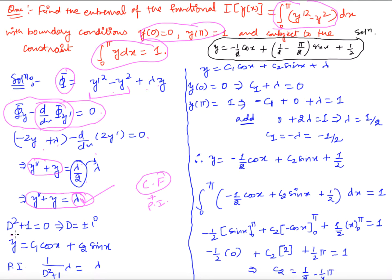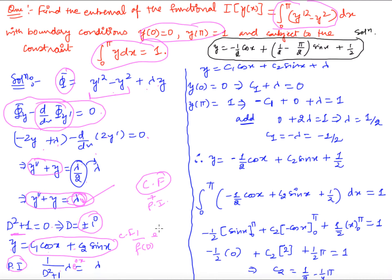For the particular integral, we apply the operator 1/(D² + 1) to the right-hand side λ. Treating λ as λ·e^(0·x), and using the formula 1/f(D)·e^(ax) = (1/f(a))·e^(ax) when f(a) ≠ 0, we get f(0) = 0 + 1 = 1 ≠ 0. So the particular integral is λ/1 · e^0 = λ. The full solution is y = c1·cos(x) + c2·sin(x) + λ.